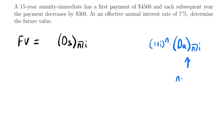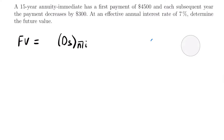The present value formula is: N minus A_N bracket I, all divided by I. You can multiply that by (1 + i)^N to get the same answer as the DS notation. But we're going to use the DS notation and its respective formula to calculate the future value. Remember, this formula represents the future value of an arithmetic decreasing annuity where each payment decreases by $1. Since our payments are decreasing by $300, we need to multiply this formula by 300.